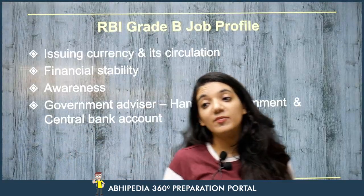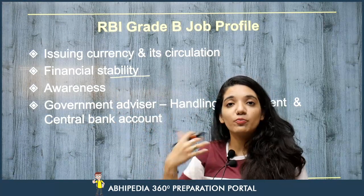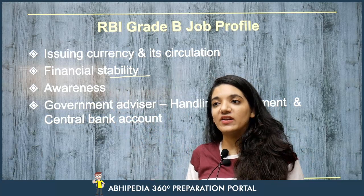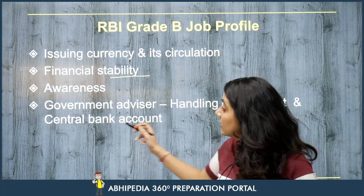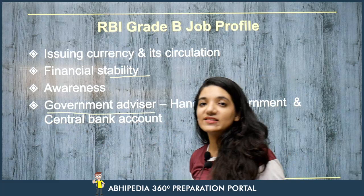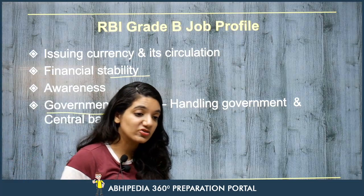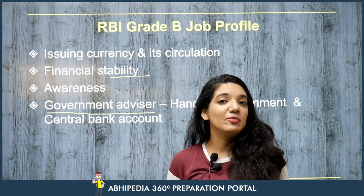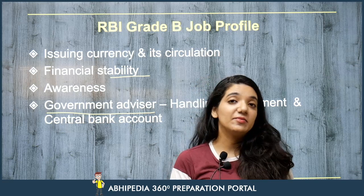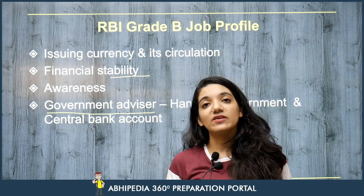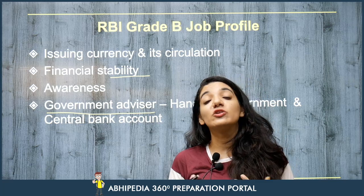When we talk about RBI Grade B officer, what is the job profile? It involves currency and circulation, financial stability strategies. These are the people who deal with the current scenario of currency and its maintenance. They provide government advice because RBI is the bankers' bank as well - managing government's treasury and bank accounts. RBI Grade B officers are involved in higher level responsibilities. They are the people who make strategies and give solutions to problems.